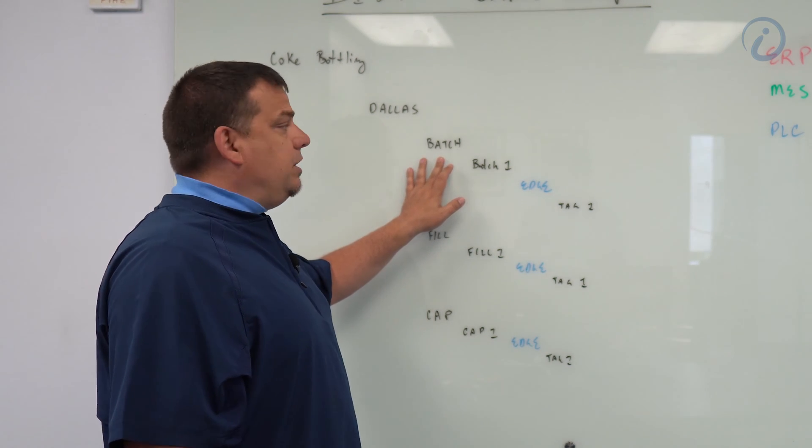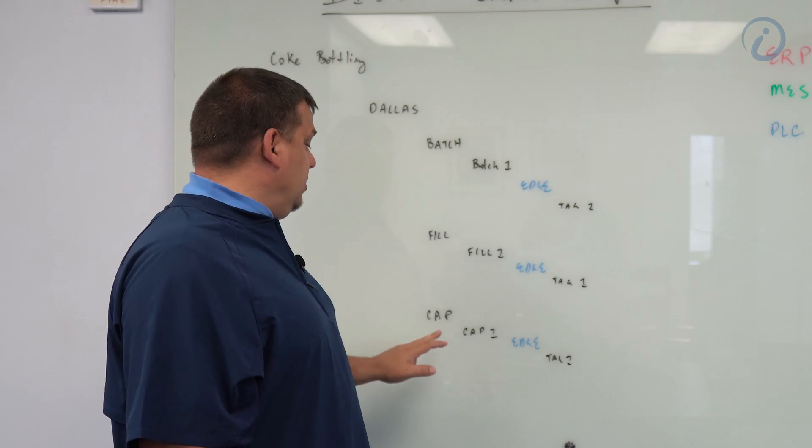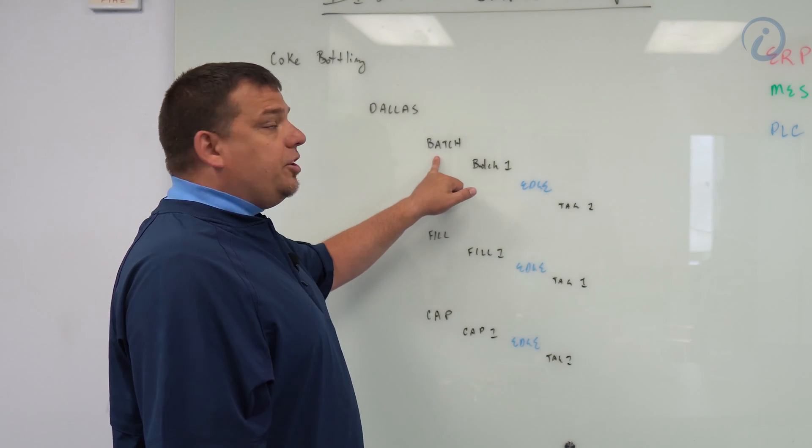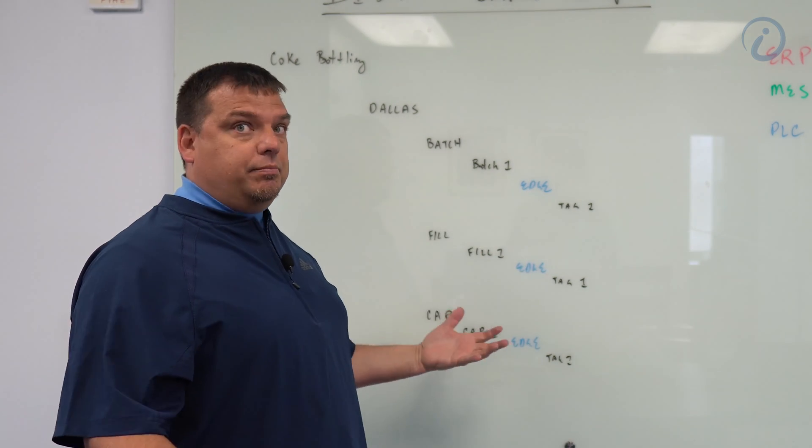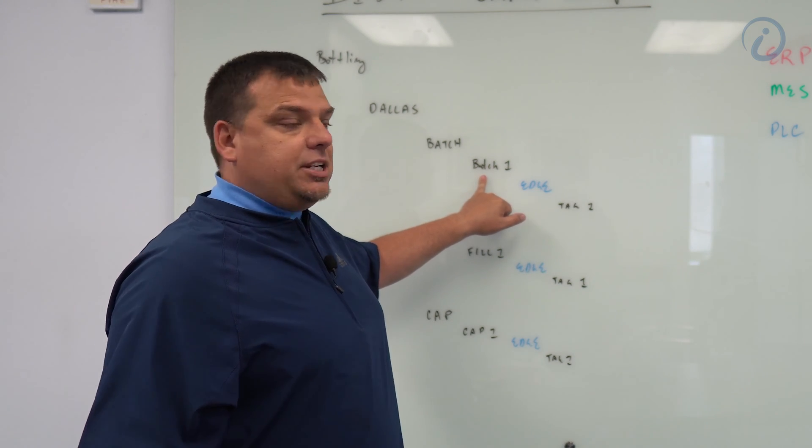So I've got a directory called batch, which is an area called batch, an area called fill, and an area called capping. And then underneath the batch, I have all of my individual production lines. So batch, I have maybe batch 1, batch 2, batch 3, batch 4.